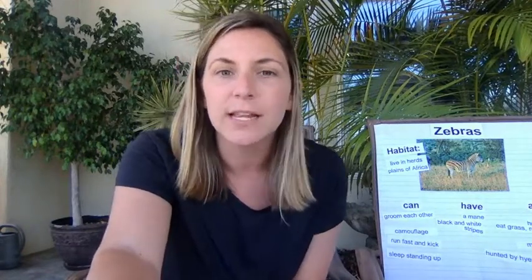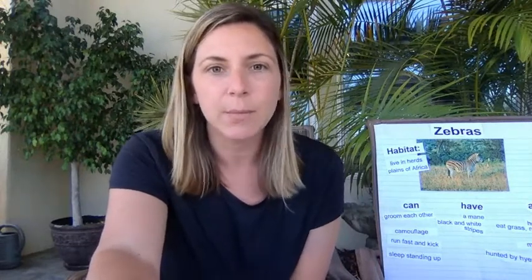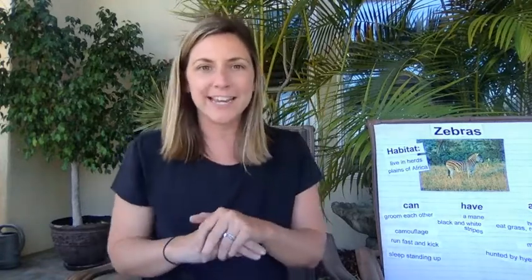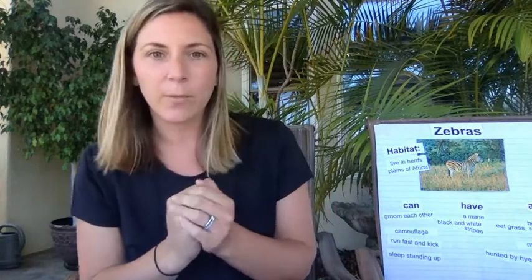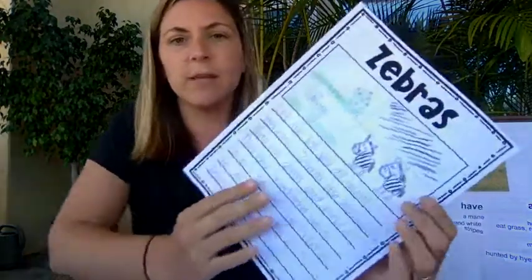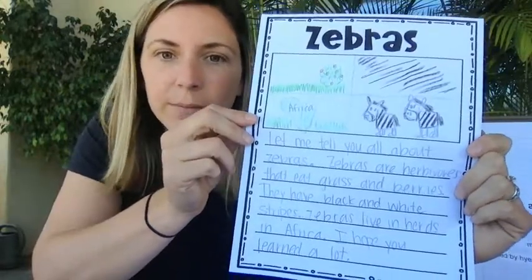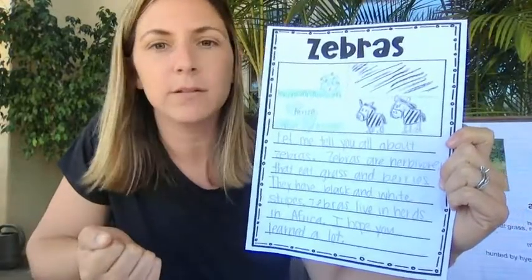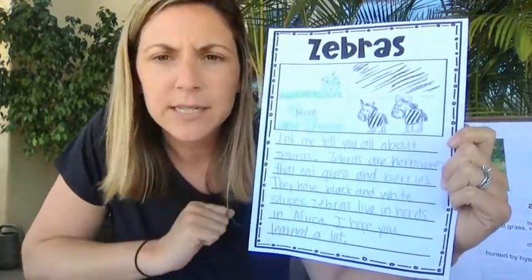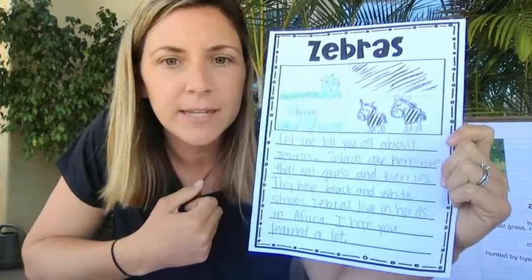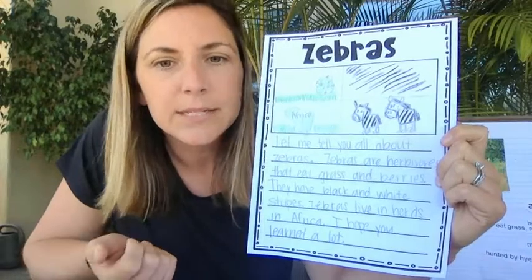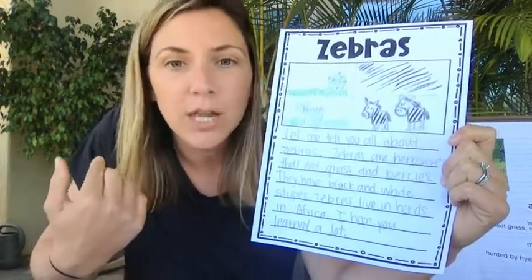Our goal this week is to try to write three sentences about zebras and a matching picture to go with it. One of my students did a chart with four pictures that matched what they wrote — I used that strategy for my picture instead of one big picture of a zebra. Here's my writing: I wrote 'Let me tell you all about zebras' as my introduction, then three facts: zebras are herbivores that eat grass and berries; they have black and white stripes; zebras live in herds in Africa. My conclusion: 'I hope you learned a lot.'